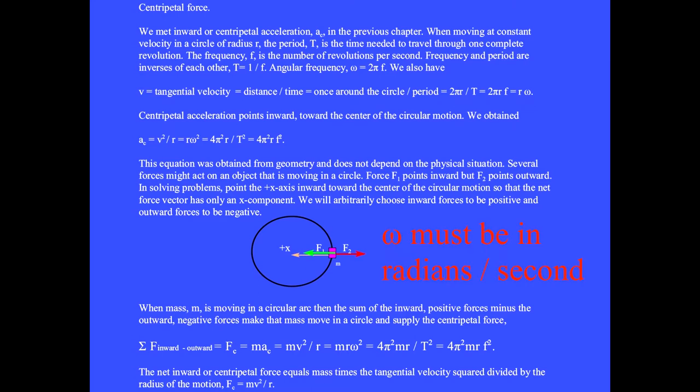Omega must be in radians per second. Centripetal acceleration points inward toward the center of the circular motion. We obtained aC equals V²/R equals Rω² equals 4π²R over the period squared equals 4π²R times the frequency squared.